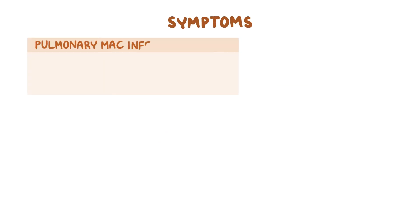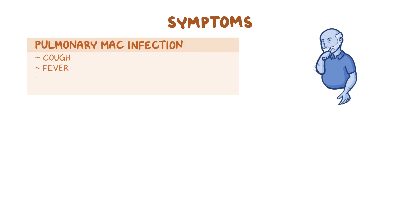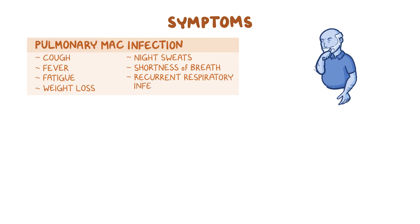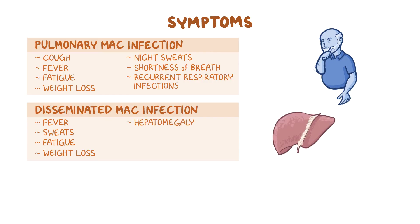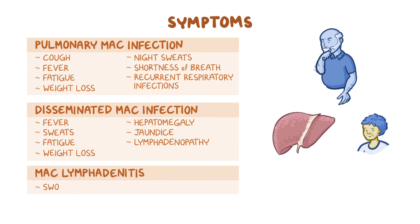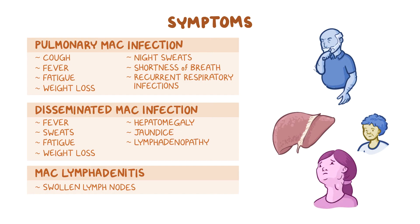Symptoms of pulmonary MAC infections include cough, fever, fatigue, weight loss, night sweats, shortness of breath, and recurrent respiratory infections. With disseminated MAC infections, there may be nonspecific symptoms such as fever, sweats, fatigue, and weight loss. On a physical exam, there can be hepatomegaly or an enlarged liver, jaundice or yellow pigmentation of the skin and mucous membranes, and lymphadenopathy, which means swollen lymph nodes. With MAC lymphadenitis, there are usually swollen lymph nodes mainly on one side of the neck.